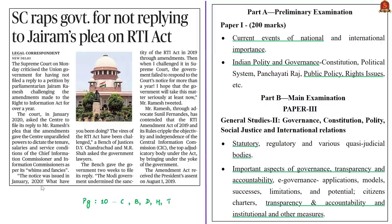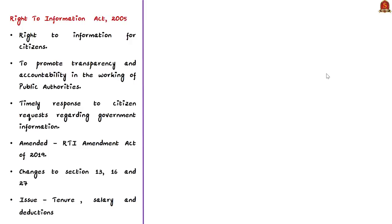A former union minister and current Member of Parliament filed a petition last year challenging the provisions of the RTI Amendment Act of 2019. Let us have a brief discussion on the amendments made in 2019 and what RTI is, the reasons for introduction, and the challenges associated with it. The RTI Act of 2005 was enacted to provide the right to information for citizens, repealing the earlier Freedom of Information Act of 2002, and mandating public officials to proactively share information.